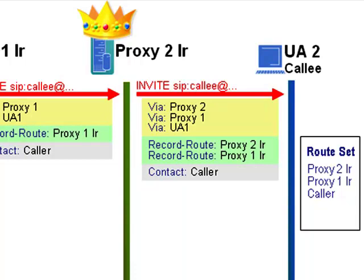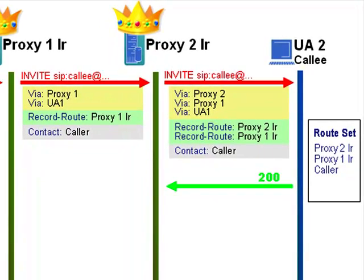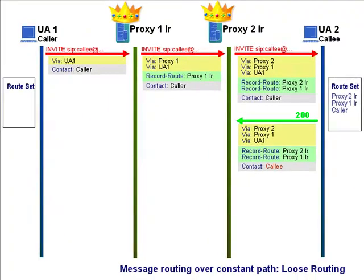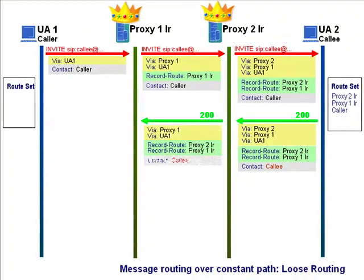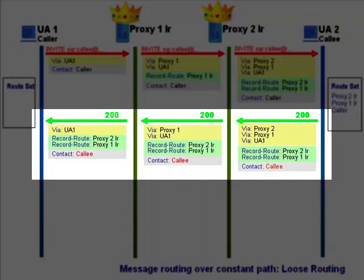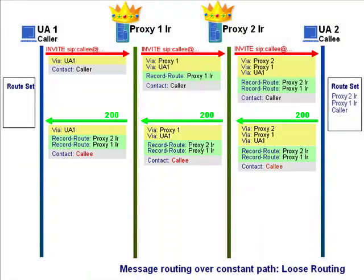Can you see how things are shaping up for keeping the servers in the signalling path? When constructing the final response, the downstream user agent copies in all the Record-Route addresses together with his own contact address, and sends that response upstream. Note how, although the Via headers are stripped off on the way upstream, the Record-Route list remains intact. It's almost as if the final response is acting as a vehicle to carry the complete list back upstream to the caller — Record-Route headers do not get stripped off on the way back upstream.